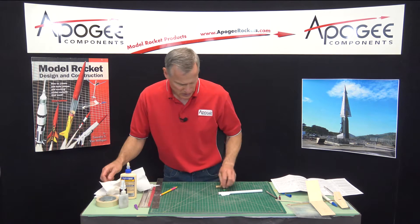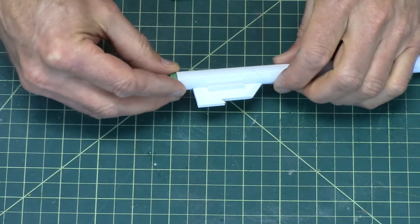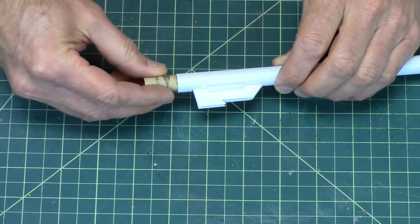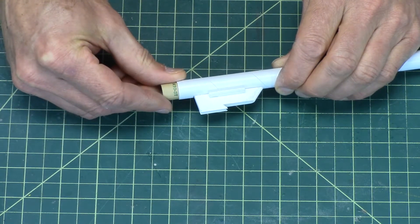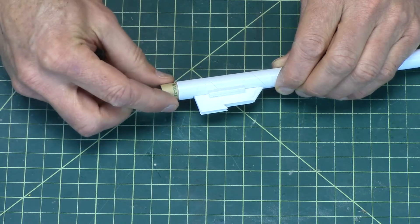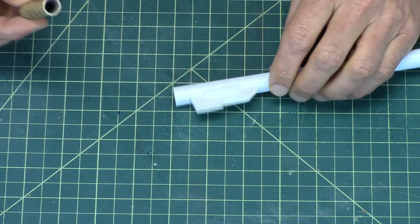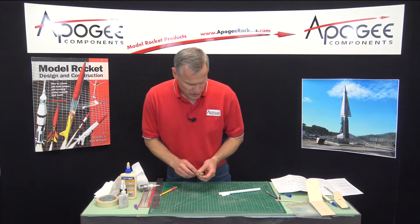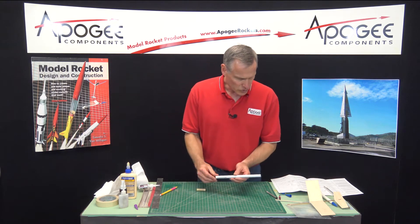And wipe that off. Take this, take a motor, and push it into the right spot, right about there, and pull it out. There's usually a little bit of glue on it, and we're going to let that dry.